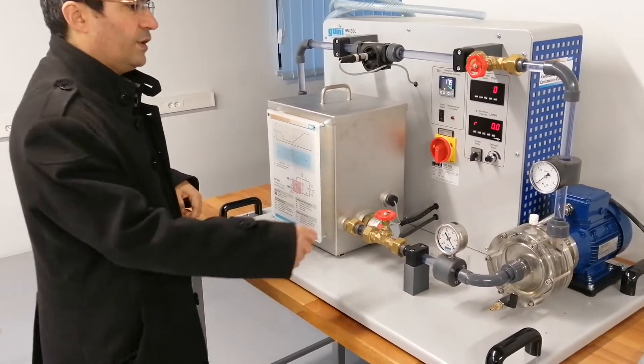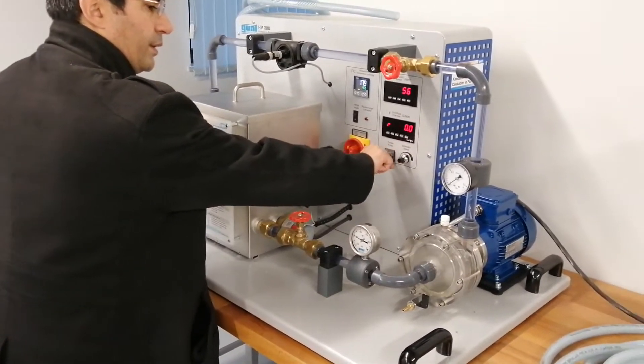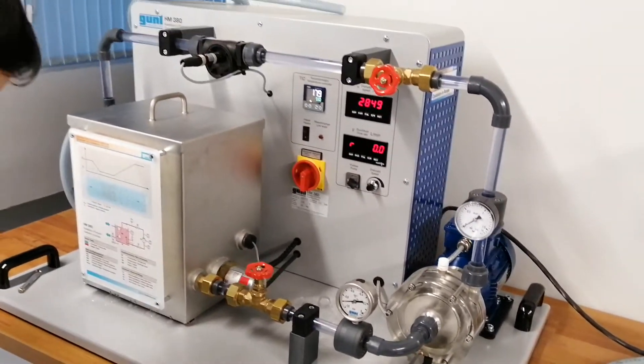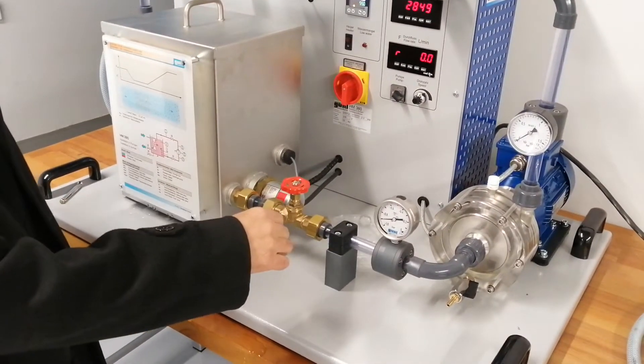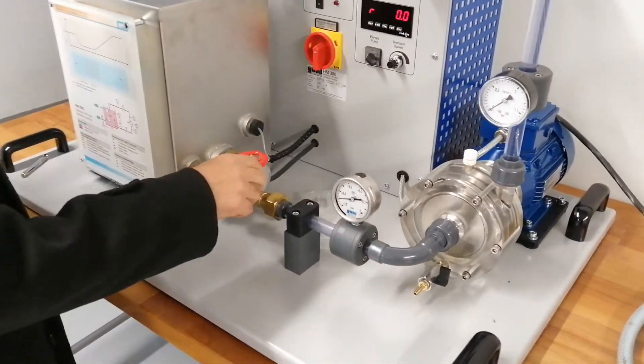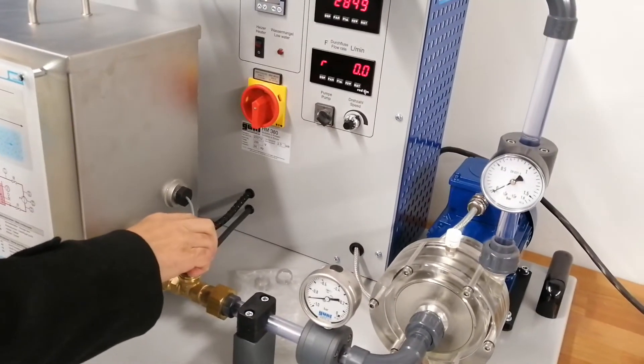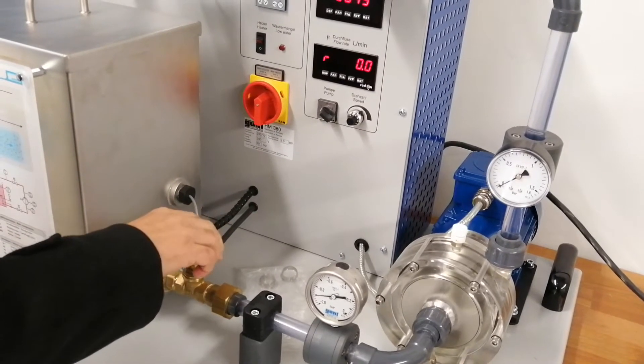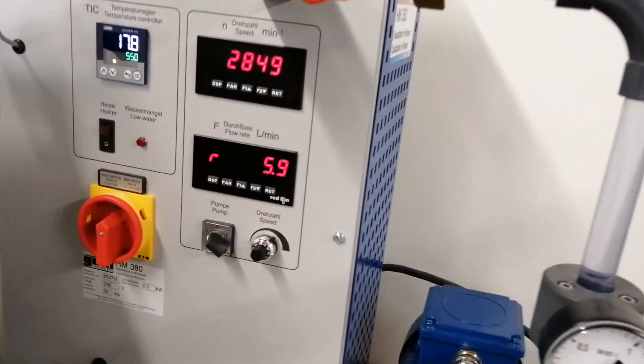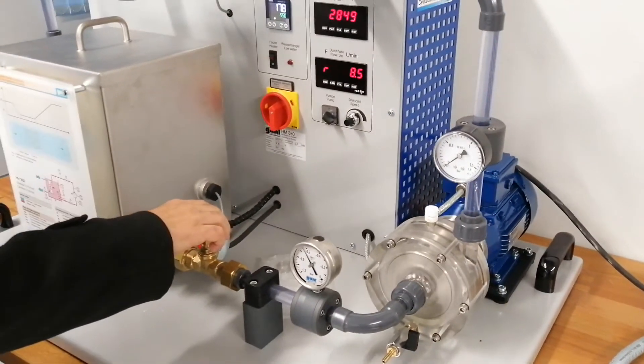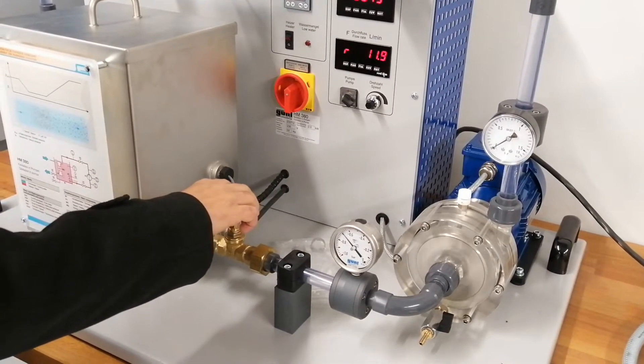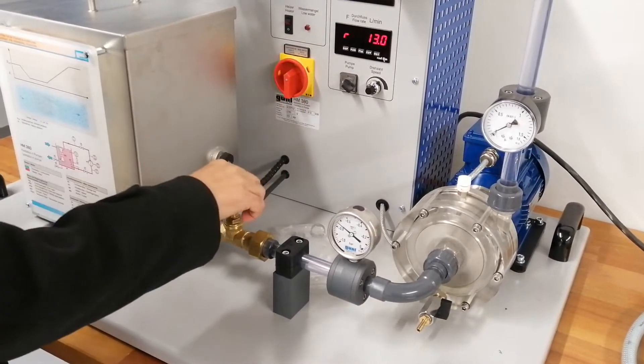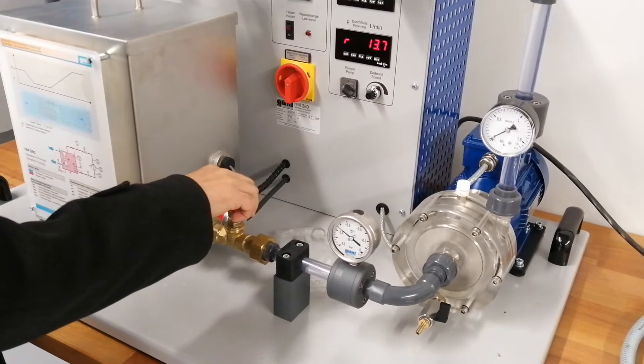First, I will start the pump. Now you will see our pump is working. And this is close. And we don't have flow rate here. This is zero. So I will open it. Now we can change the flow rate, which means the flow rate increase. I'll increase the speed.